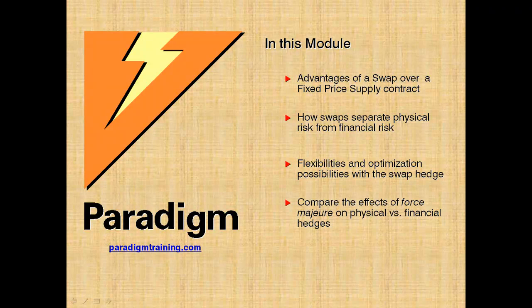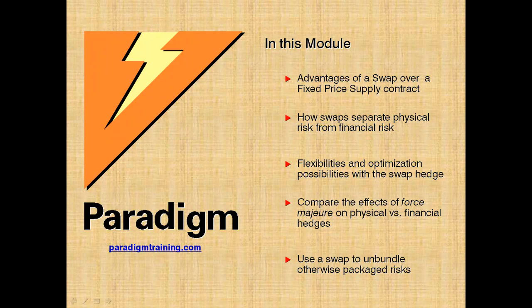The consequences of force majeure differ between swap hedging and physical hedging, and risks already commingled in an existing contract can be unbundled using a swap.